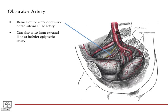To start us off, we'll talk about the obturator artery. Back to the pelvis here — it's a branch off the anterior division of the internal iliac artery. You can see that here: here's the internal iliac, here's the anterior division, and then indicated with the blue arrow, here's your obturator artery traveling this way.